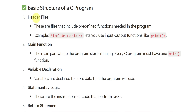First we have header files — these are files that include predefined functions needed in the program. For example, #include <stdio.h> is written at the starting heading. It lets you use input and output functions like printf and scanf. Including stdio.h is very important — without it, a C program cannot be started or written.